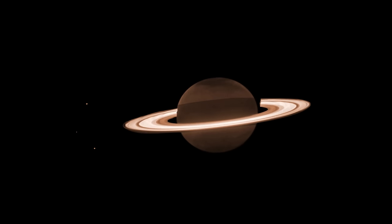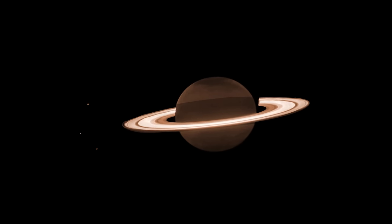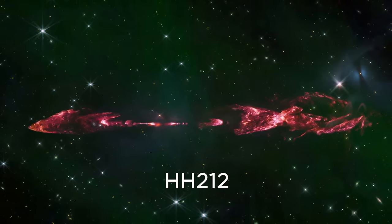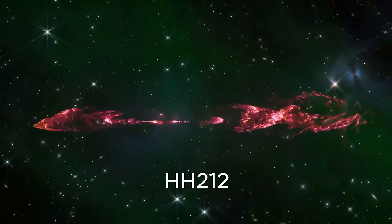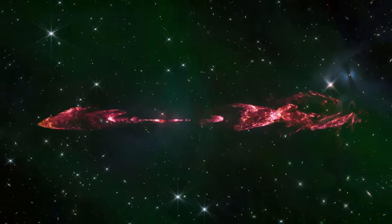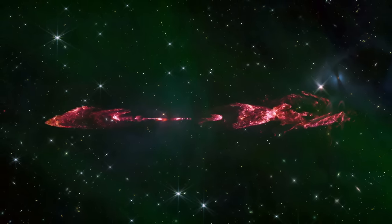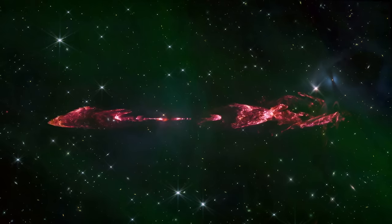Three of Saturn's moons are seen to the left. This is HH-212, a very young star, no more than 50,000 years old. It launches energetic jets from both poles that light up the molecular hydrogen in pink.